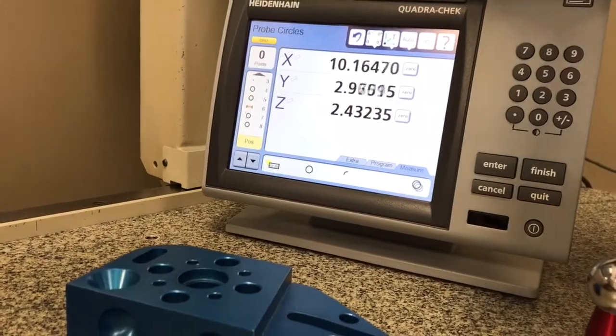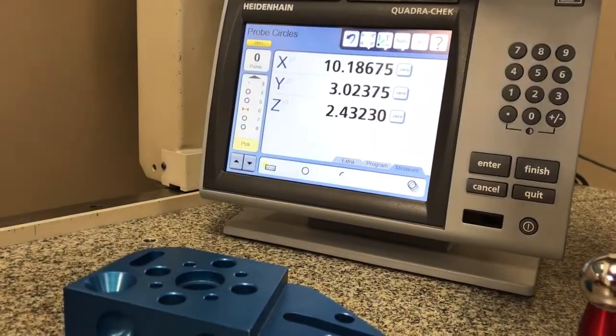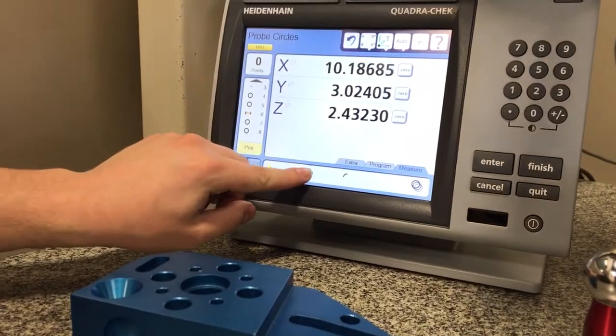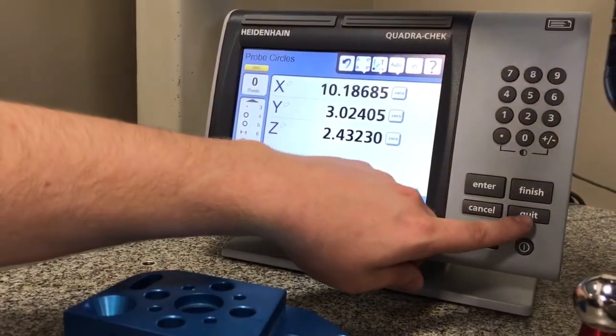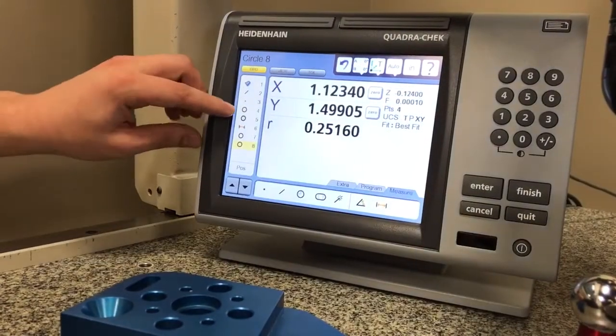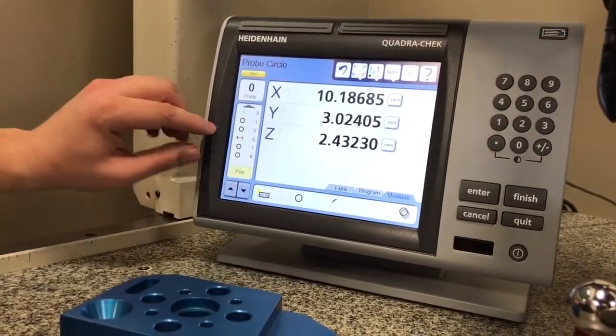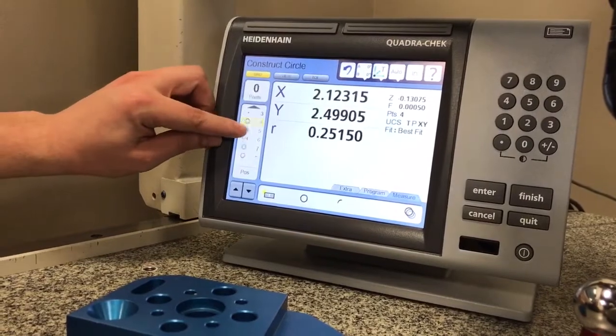Now let's say if I want to do a bolt circle of those four that I just did. So I'm going to go on circle again, then circle right there, and do the four.